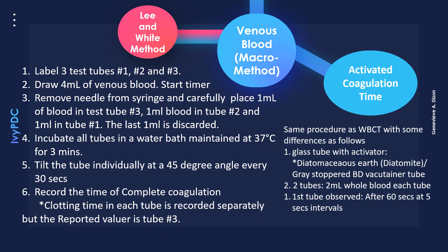The activated coagulation time uses the same procedure as the Lee and White method with some differences. A glass tube with an activator is used — specifically a grey-stopper vacutainer tube with diatomite as the activator. Only two tubes are used, and two ml of whole blood are placed in each tube. The first tube is observed after 60 seconds with intervals of five seconds.